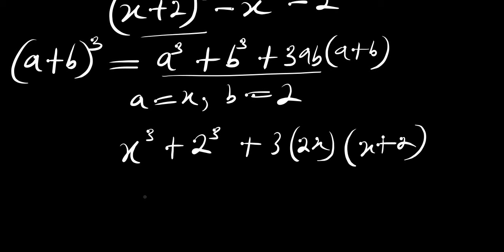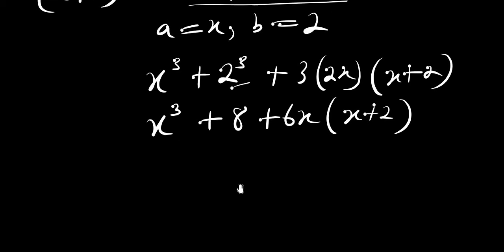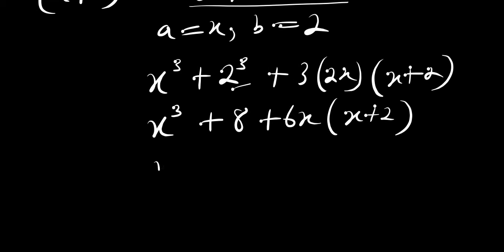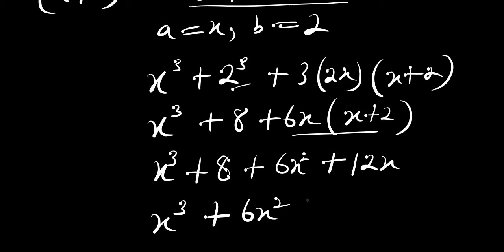We are going to have x³ plus 8 — since 2³ is 8 — plus 6x times (x plus 2). If we multiply that out we get 6x² plus 12x. So arranging everything: x³ plus 6x² plus 12x plus 8.